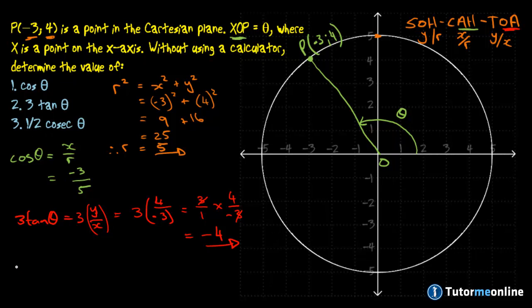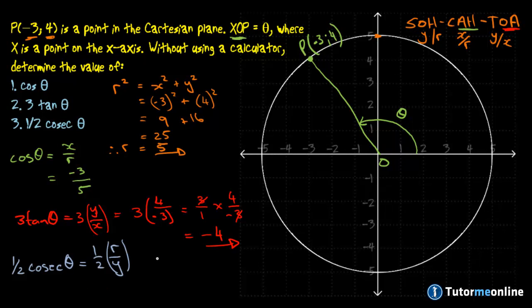And then finally the half of cosecant of theta. Cosecant is the reciprocal to sine function. So the sine function would be y over r. This would be r over y multiplied by a half. That would be 1 half multiplied by our radius which is 5 over y which is 4. We then just algebraically solve and that would be 5 over 8.